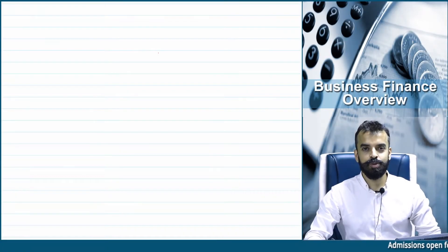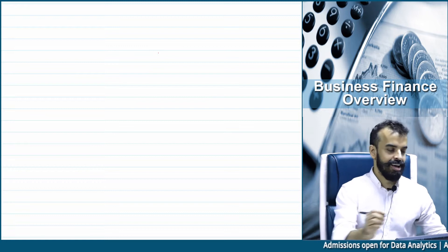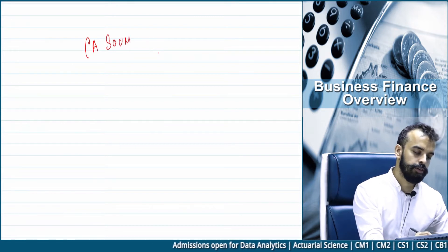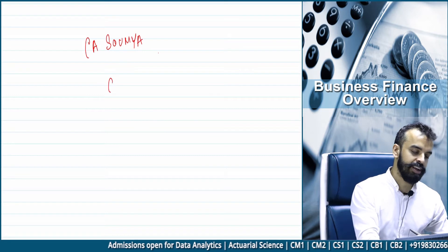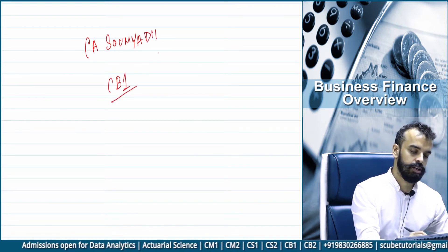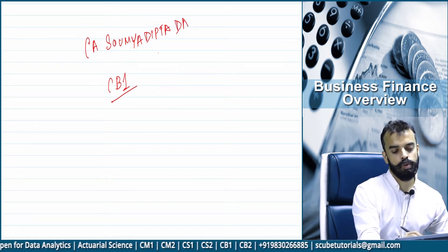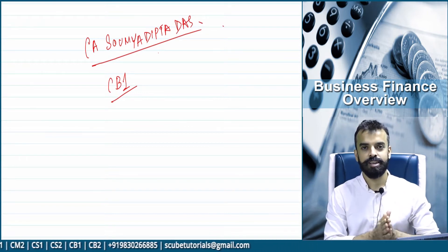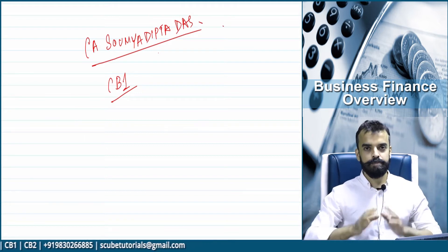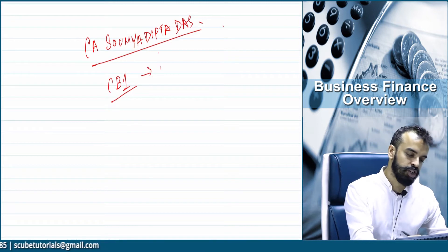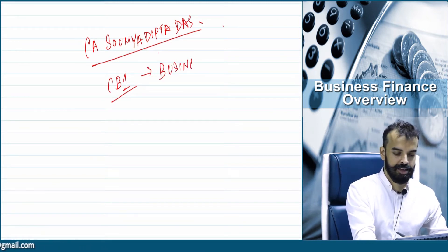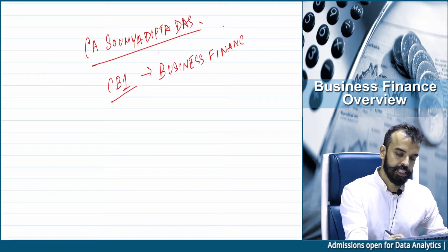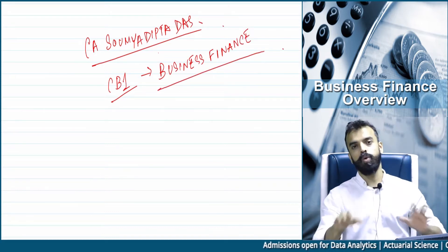A very warm welcome to this session. I am CA Shomo Dipto Das. We are going to talk about this paper called CB1, which is the first paper of your actuarial career. This paper deals with the subject called business finance. Now what will a student expect to learn out of this paper? I am going to tell you in detail.